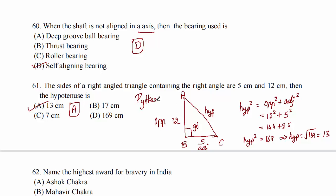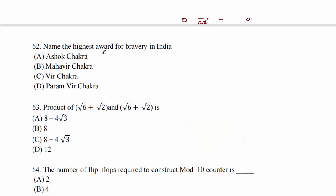Question 62: name the highest award for bravery in India. The options are Ashoka Chakra, Mahavir Chakra, Veer Chakra, and Param Vir Chakra. The highest bravery award is Param Vir Chakra, usually given to military persons for war. Option D.